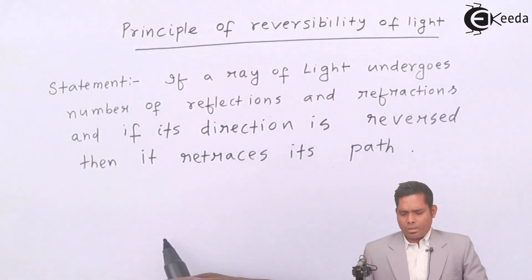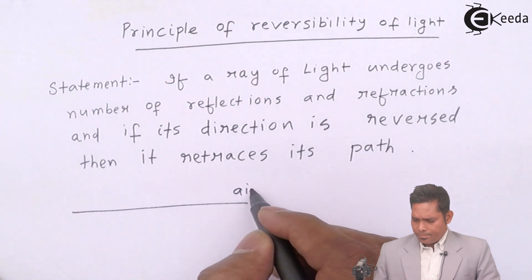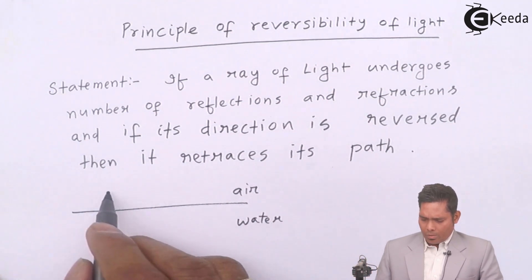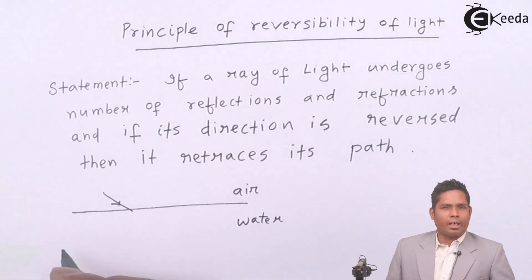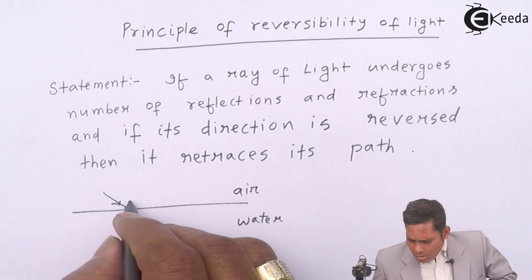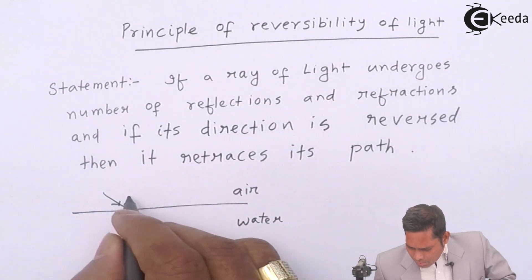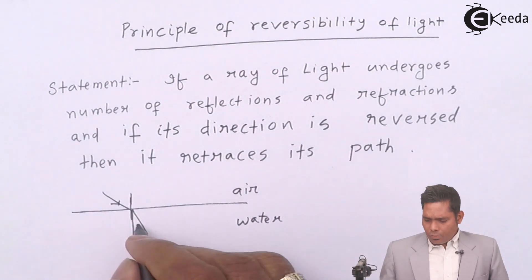What is the meaning of this? Suppose I have a medium air here and another medium, say water, here. Now light falls on this at the interface of air and water. It bends towards normal because water being a denser medium, it follows this path.